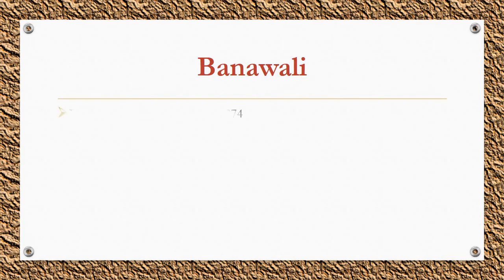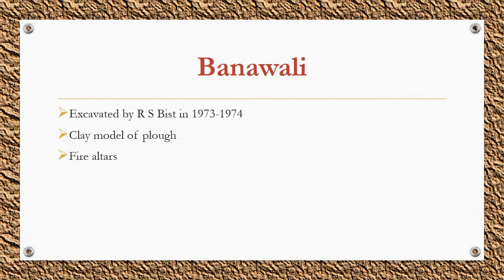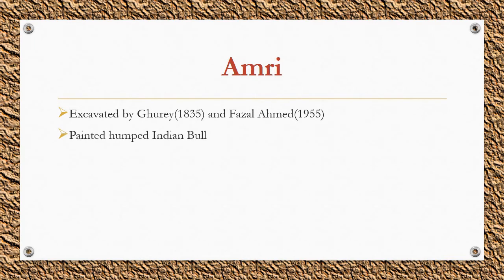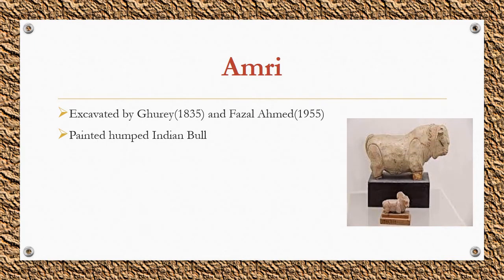Banawali was excavated by R.S. Bisht in 1973 to 1974. Clay model of a plough, high quality barley, and fire altars were found here. Fields were found only in the lower town and not in the citadel. It is situated in Hisar district of Haryana on the bank of the now-dry course of the river Saraswati. Amri was excavated by Ghure in 1835 and Fazal Ahmad in 1955. It yielded a beautiful painted humped Indian bull, was a pre-Harappan settlement, and is situated in Sindh, west of the river Indus.